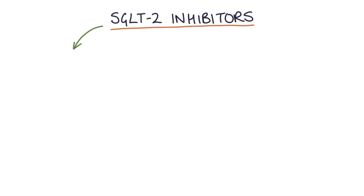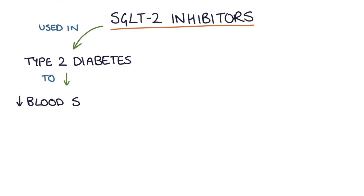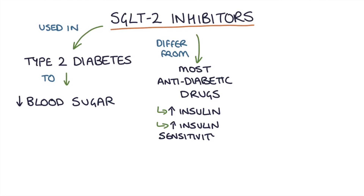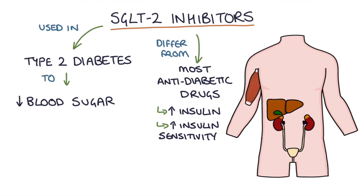SGLT2 inhibitors are used in type 2 diabetes to help reduce blood sugar levels. They differ slightly from most anti-diabetic drugs, which work by either increasing the insulin in the body or increasing the insulin sensitivity of the cells, with the objective of getting the body to take more glucose out of the blood and store it in the tissues — that's how they reduce blood sugar levels.